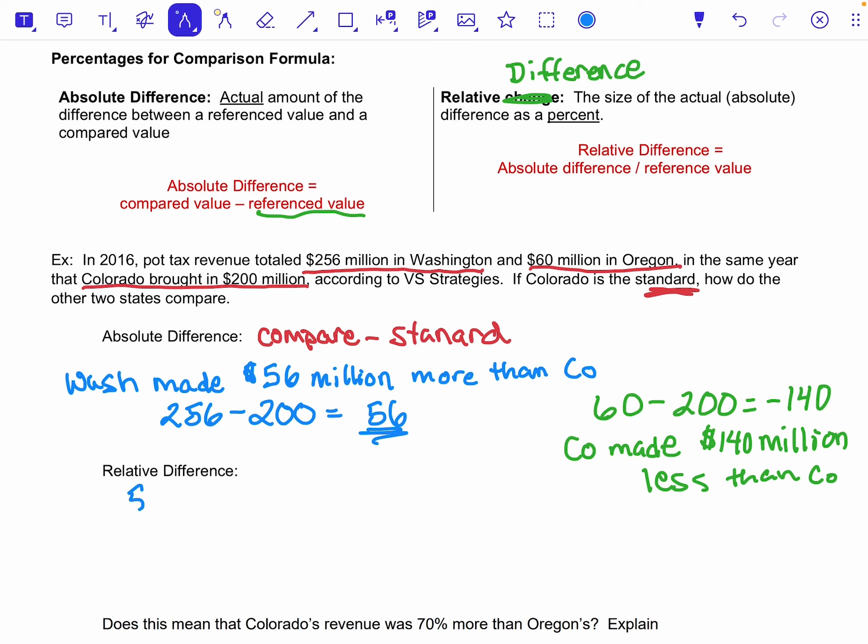So starting with Washington, if I wanted to find the relative difference, I would take that absolute difference and I'm going to divide it by the 200 that Colorado, our standard, has. And that would get us around 0.28.